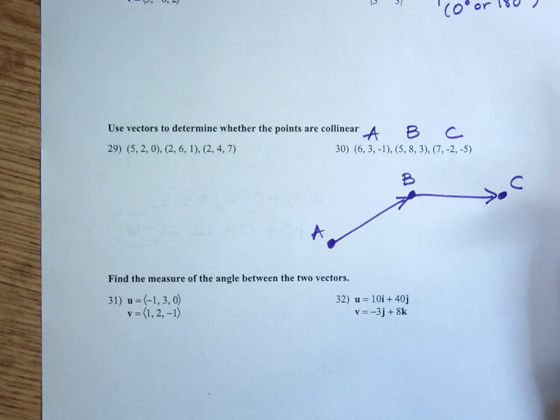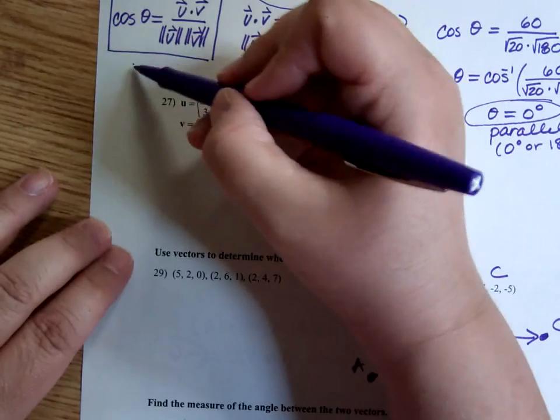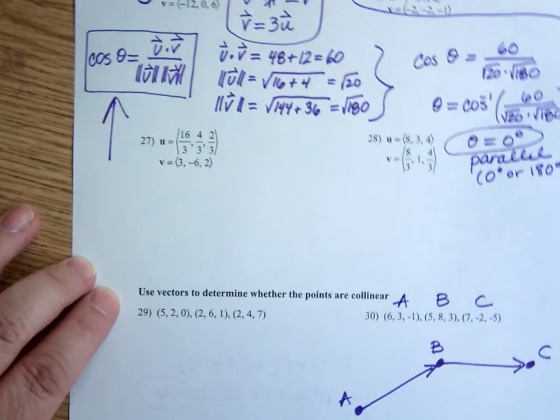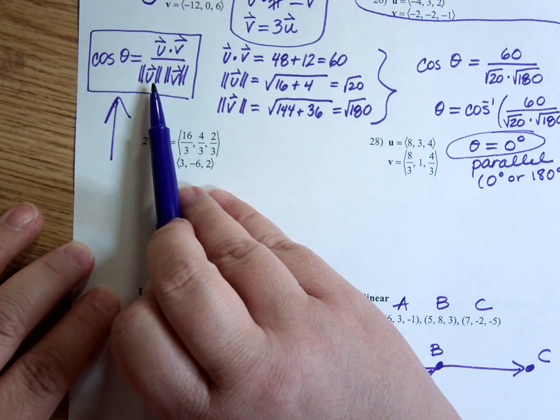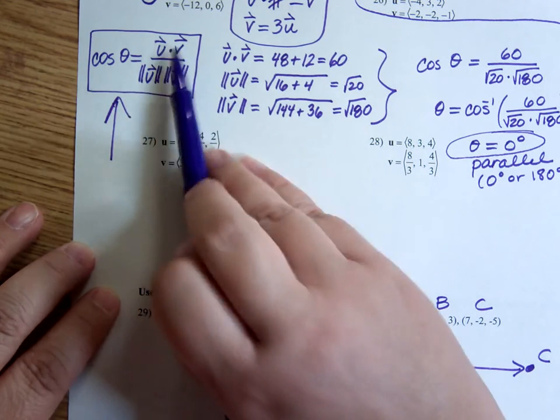Next, the measure of the angle between the two vectors, that's just using this formula. So on 31 and 32, you're just using this formula. You end up doing an inverse cosine of all of this mess.